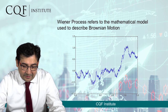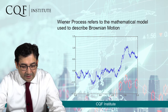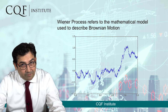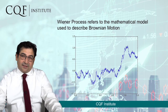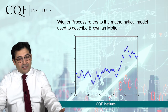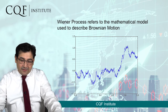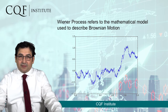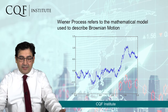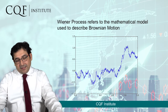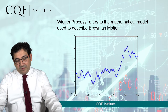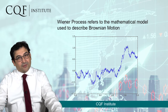The Wiener process is what this mathematical model is called. It refers to the mathematical model used to describe Brownian motion and is an excellent way to describe what happens in reality. Here we have an image with time on the horizontal axis and the stock price on the vertical axis, showing the classical change in the price of a stock.